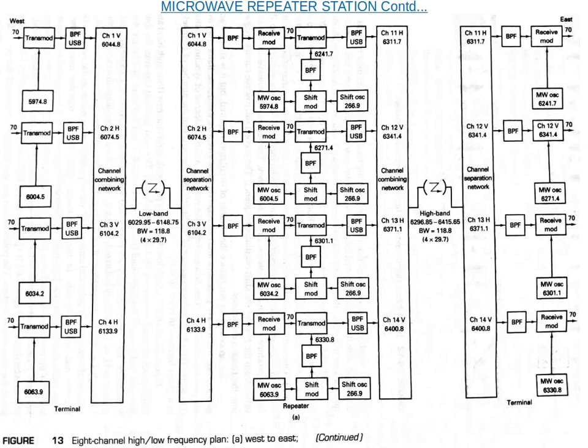In the west-to-east direction, the repeater receives the low band frequencies and transmits the high band frequencies. After channel one is received and down-converted to IF, it is up-converted to a different RF frequency and a different polarization for retransmission. The low band channel one corresponds to high band channel 11, channel 2 to channel 12, and so on.